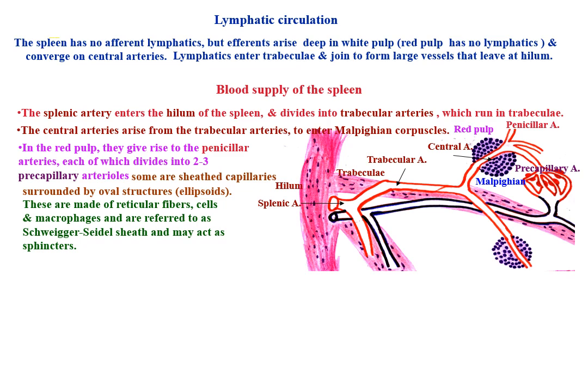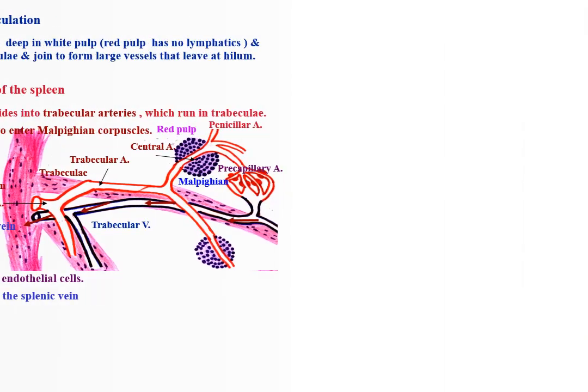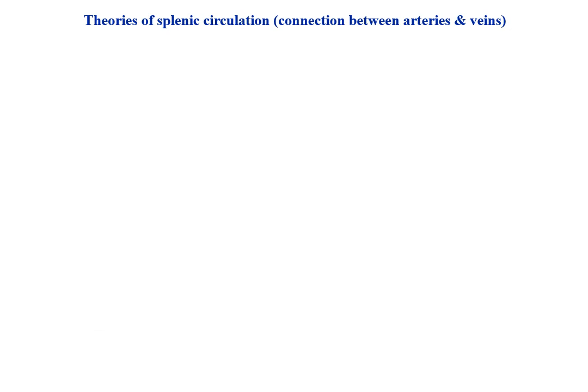These ellipsoids are made of reticular fibers, cells, and macrophages, and are referred to as Schweigger-Seidel sheaths, and may act as sphincters. The venous sinusoids collect the venous blood to the veins of the pulp. These unite to form trabecular veins, which collect into the splenic vein that leaves at the hilum.